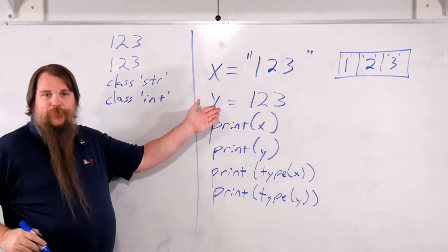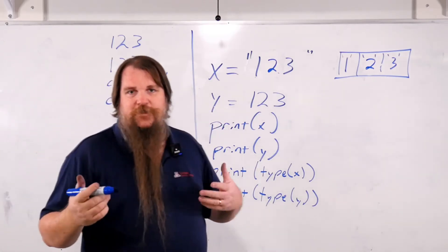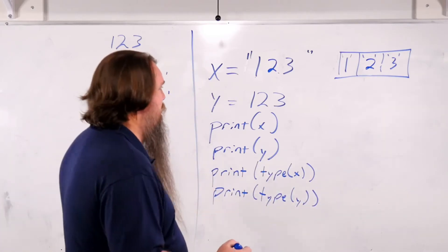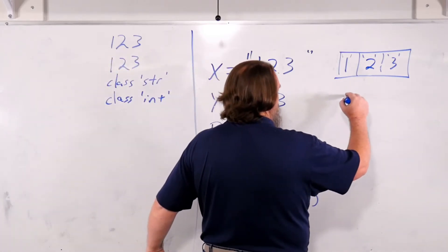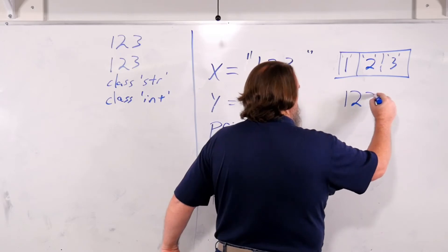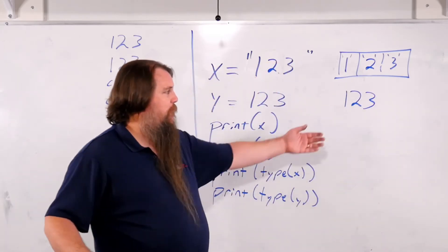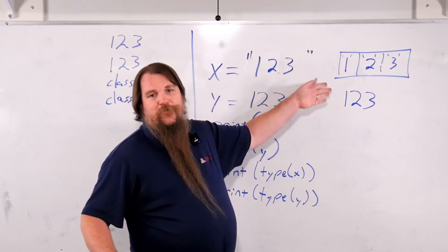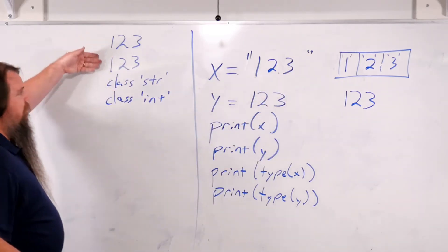Now how is this stored? Well an integer actually represents something that's doing some counting, that holds a numeric value. So there literally is some slot out in memory that holds the number 123. So these are stored very differently, even though they print the same.